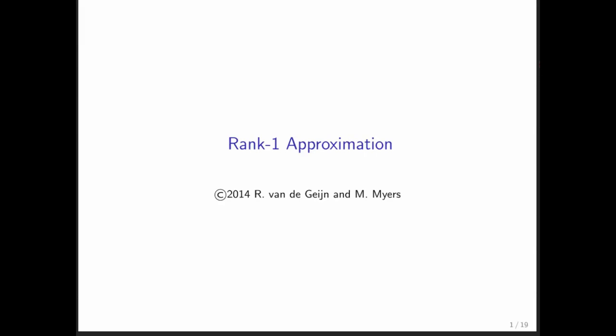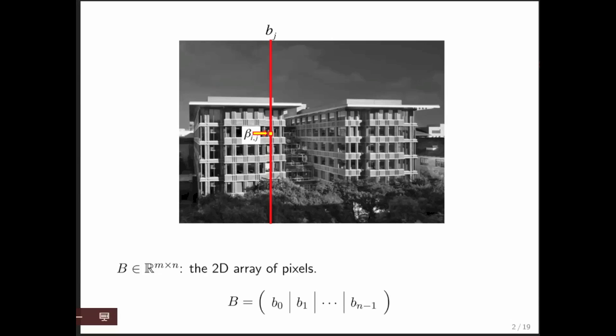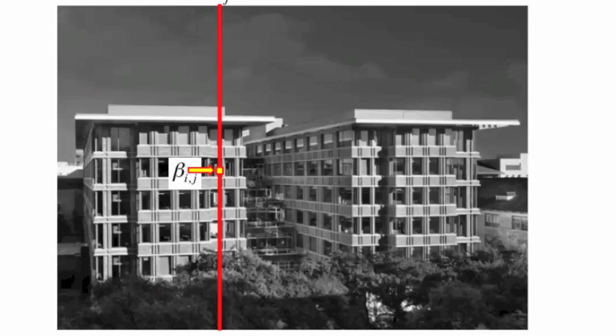So let's look at rank 1 approximation. Here's a picture. Think of this picture as a matrix. Think of this red line as representing the jth column, so that the matrix can be thought of as consisting of n columns. And in that case, the ij entry in this matrix is simply the ij pixel for this picture.